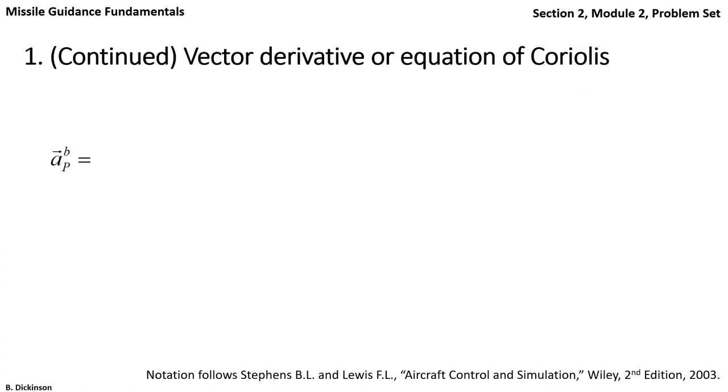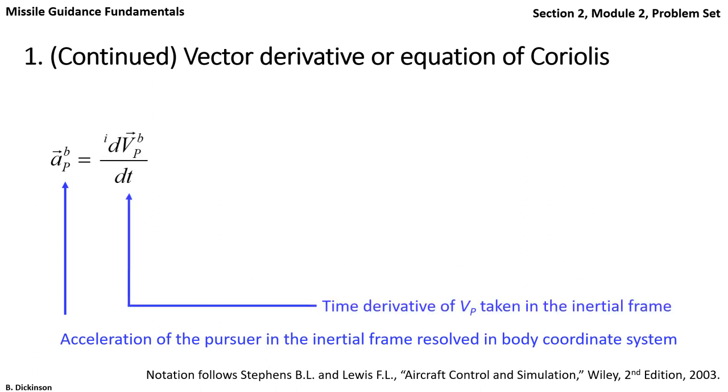Here's the acceleration vector we seek to determine. It's resolved in the body frame. The arrow denotes that it's a vector. We determine it as the time rate of change of the pursuer velocity vector. That velocity is resolved in the body coordinate system, but the derivative is taken in the inertial frame.